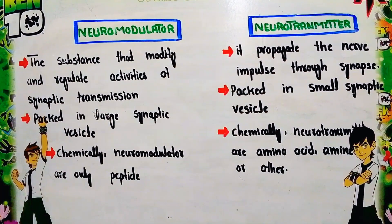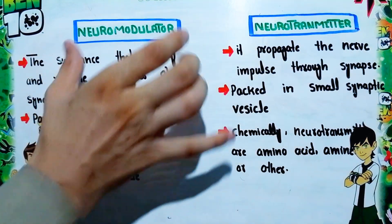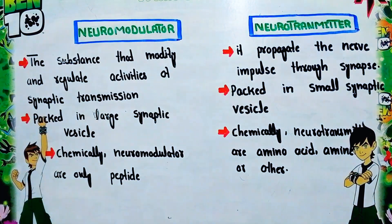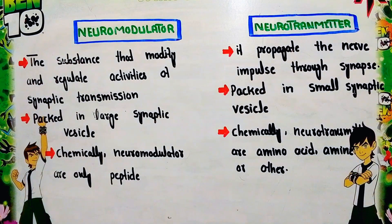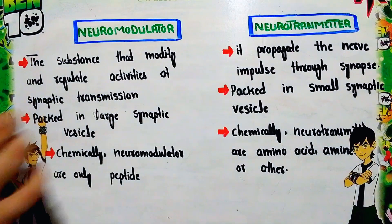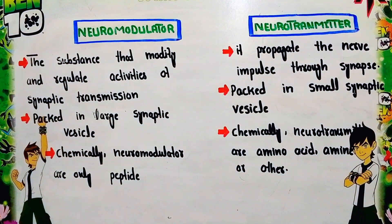Now let us discuss a related but different term — neuromodulators. The difference between neurotransmitters and neuromodulators: neuromodulators are substances that modify and regulate the activities of synaptic transmission. These are substances mainly responsible for regulating the nerve impulse transfer at the synapse.